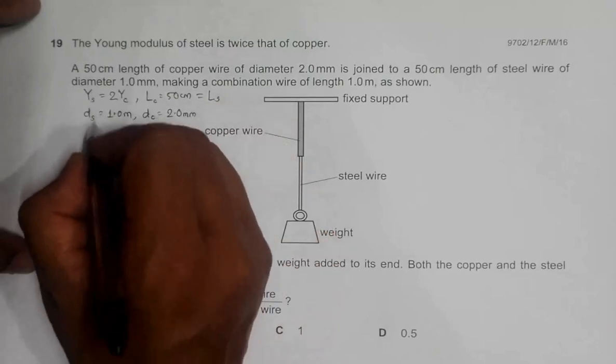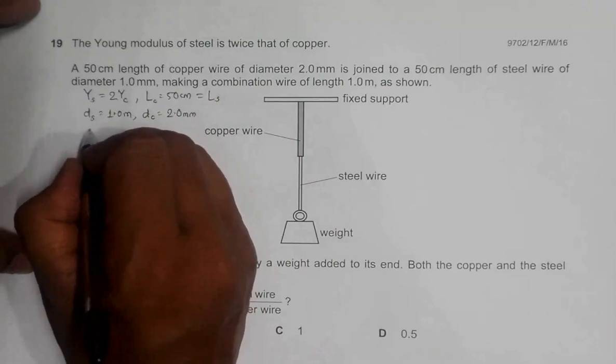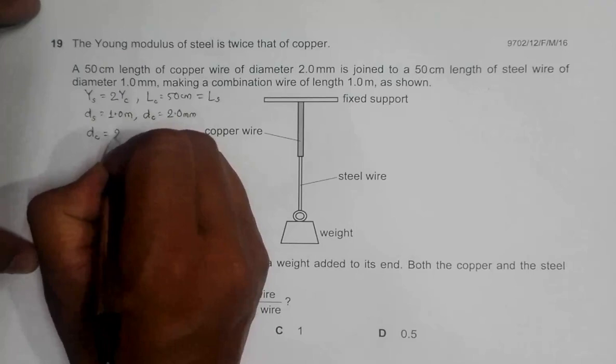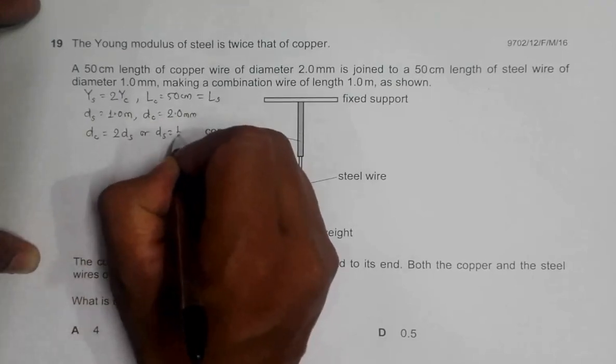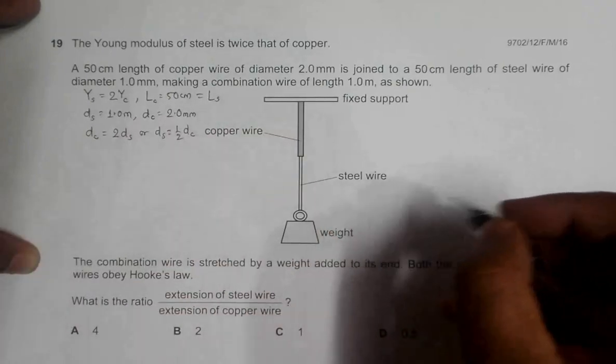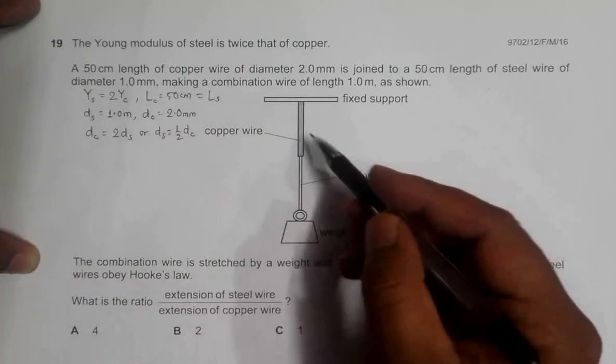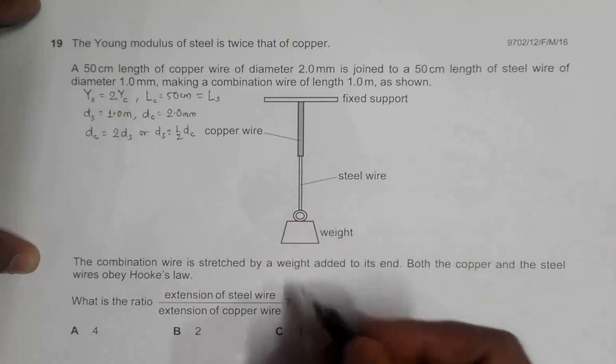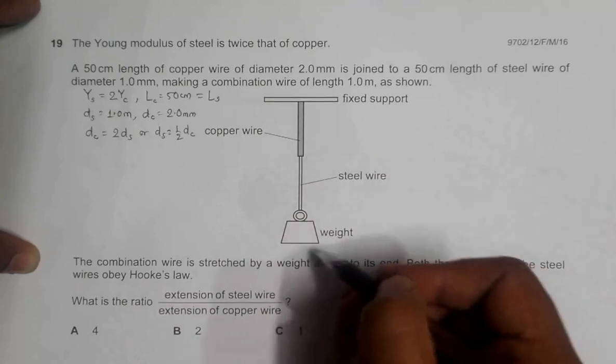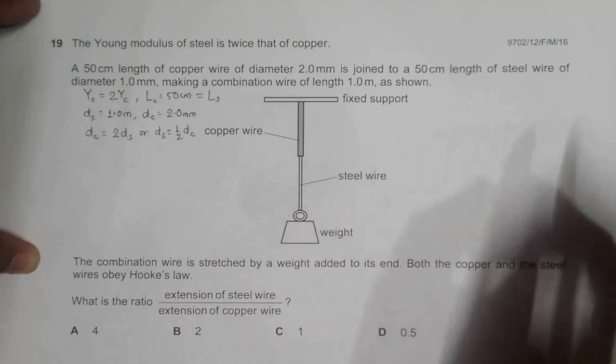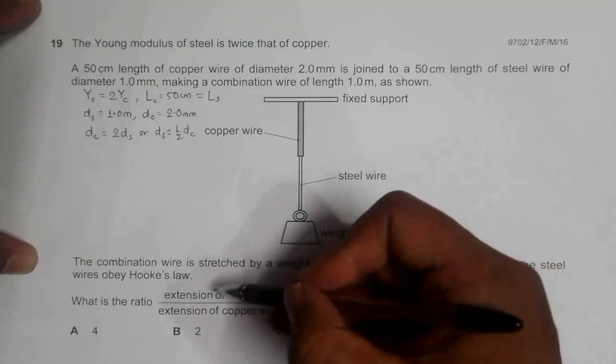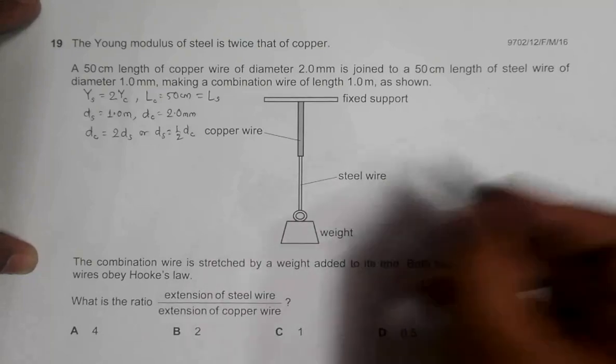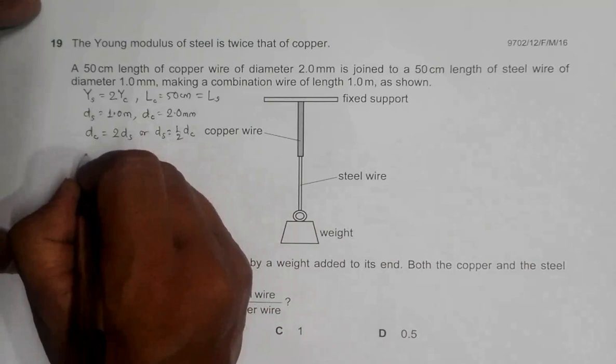This means diameter of copper is equal to twice the diameter of steel, or diameter of steel is equal to one-half of diameter of copper. Now this combination wire is stressed by a weight added at its end, so the forces in both should be the same. Both the copper and steel obey Hooke's law, so we have to find the ratio of the extensions.